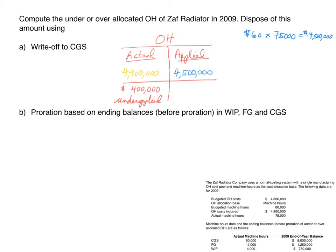We do not want a balance in overhead, so we want it closed. In this first method, we close the entire balance to cost of goods sold. We have a debit balance in overhead, so we credit overhead for $400,000 and debit cost of goods sold. Since we were under-applied, we increase cost, thereby decreasing net income. We use this method typically when the overhead balance is immaterial.